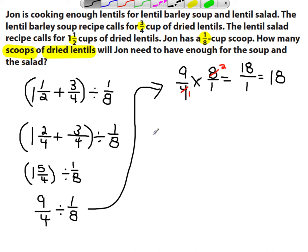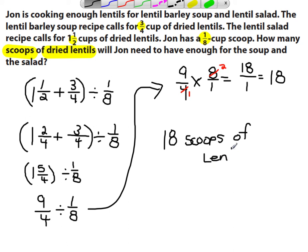So in order to make both recipes and have enough lentils for both, John needs a total of eighteen scoops of lentils. And I circle my answer.